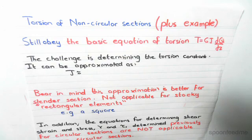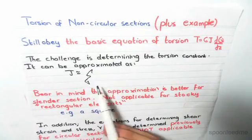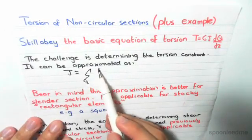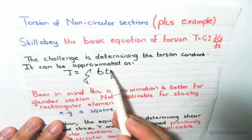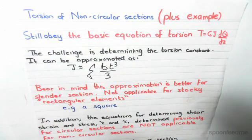So there's an equation that shows you an approximate value for this torsion constant of a non-circular section, and this equals the sum of all elements, Sigma BT cubed divided by 3, where B is the breadth, T is the thickness, and we divide this by 3. Sigma is the sum of all elements within a structural element.